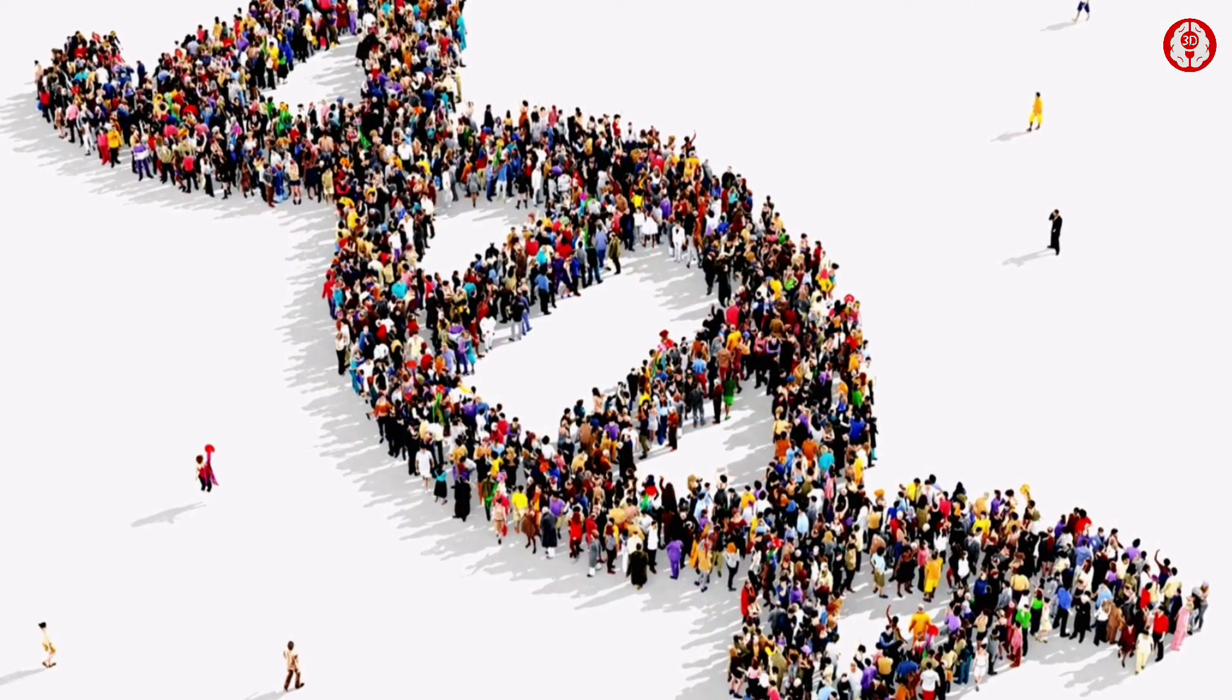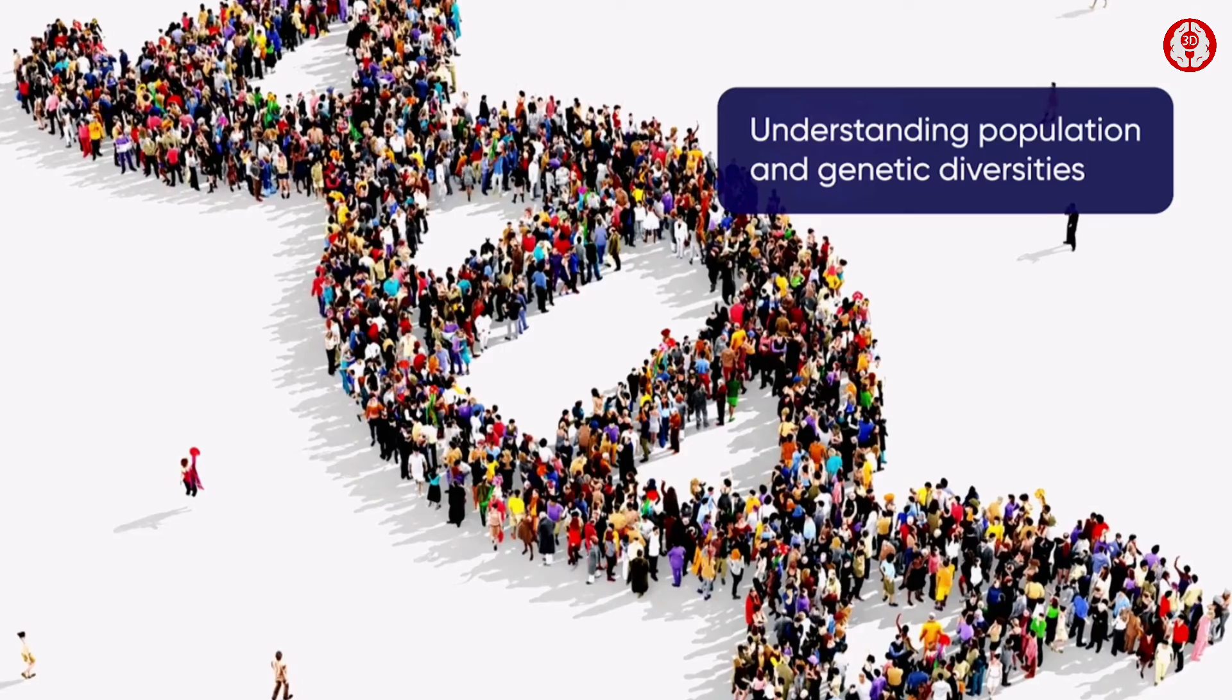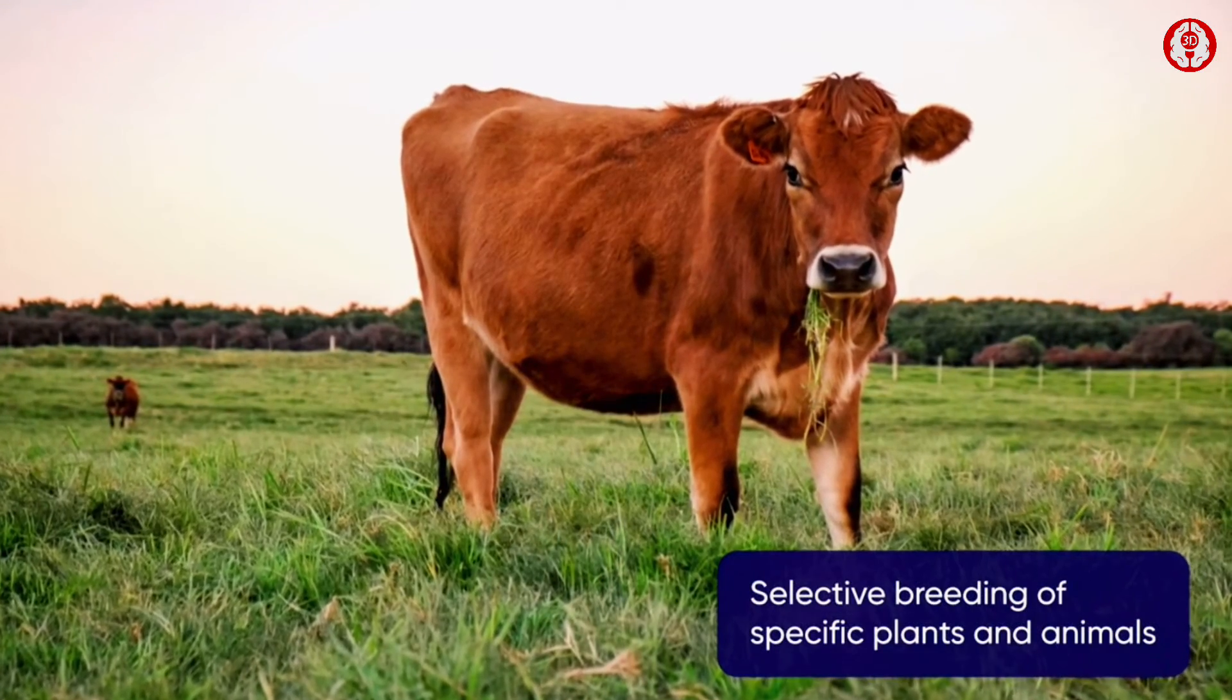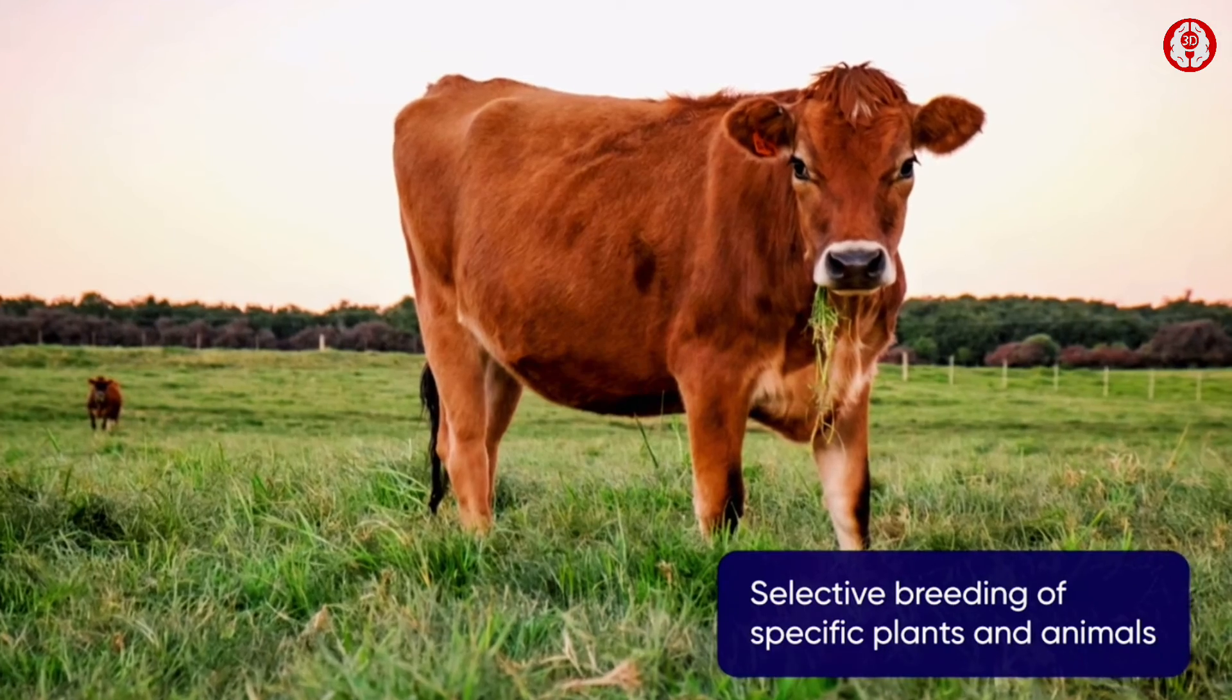Furthermore, DNA fingerprinting helps determine population and genetic diversities and facilitates the selective breeding of plants and animals like the Jersey cow.